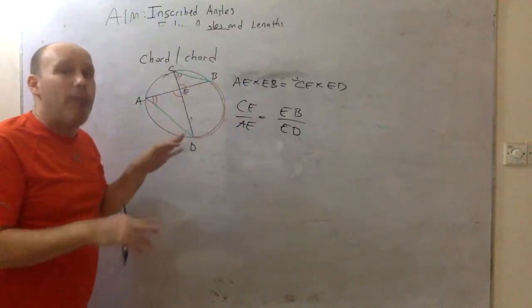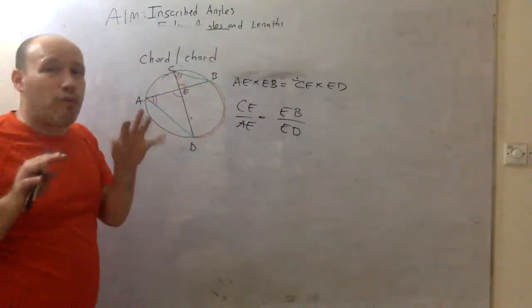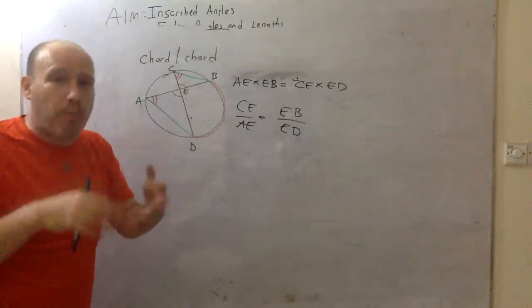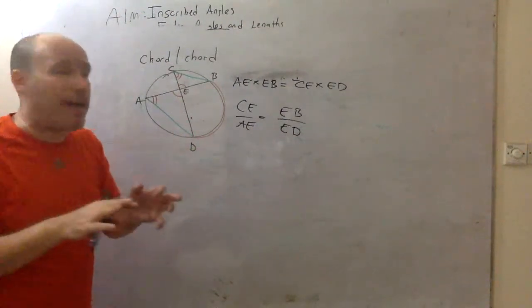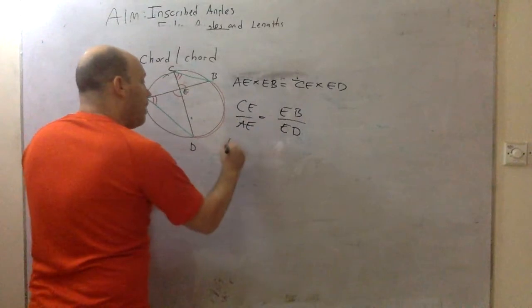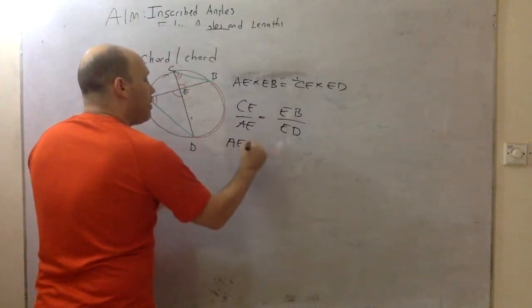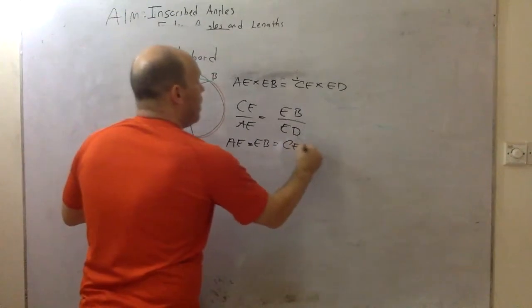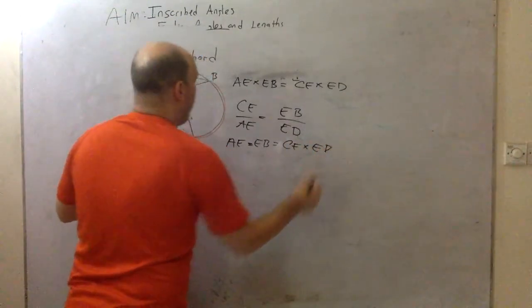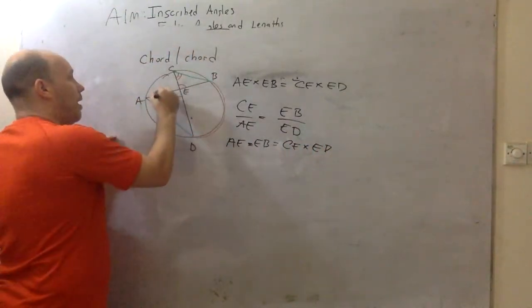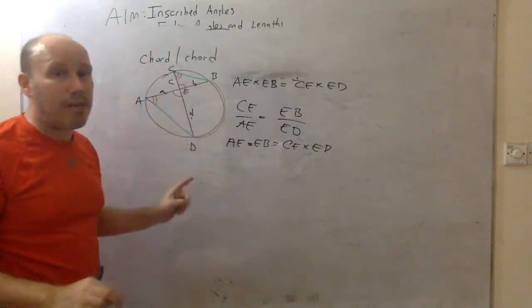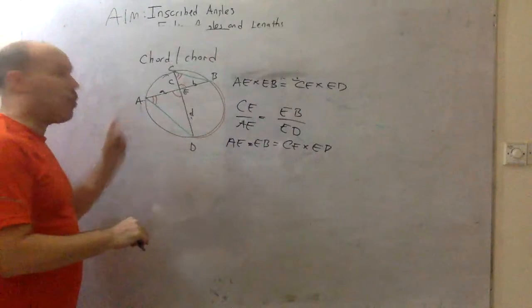Once again, because they're similar triangles, we can find ratios. Once again, we don't even know what the lengths are, but the Greeks, you learn about the golden ratio, they had ratios, they had proportions, they weren't comparing things. Cross multiply, AE times EB is equal to CE times ED. I think that's kind of awesome. Once again, A times B is equal to C times D. That's awesome.